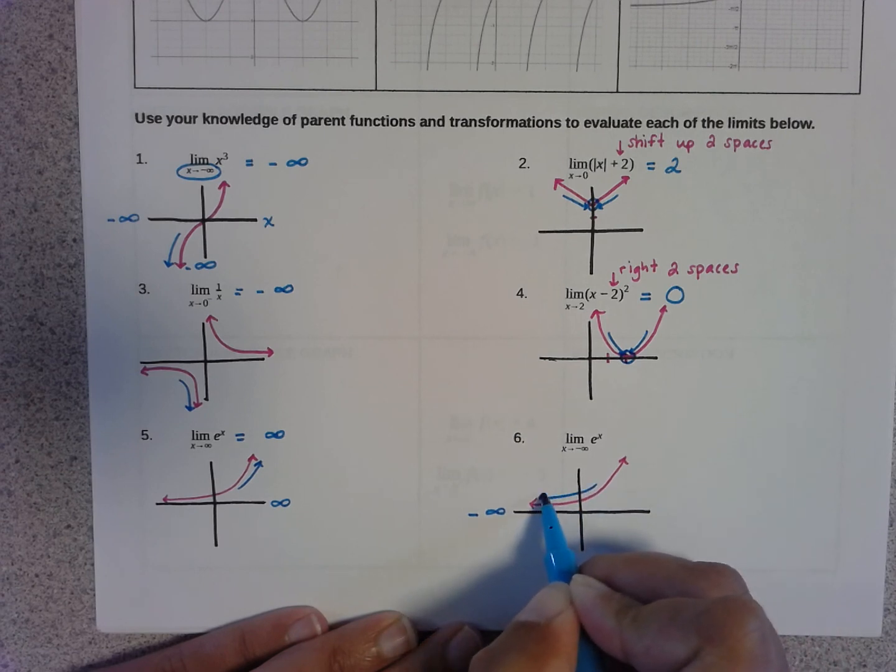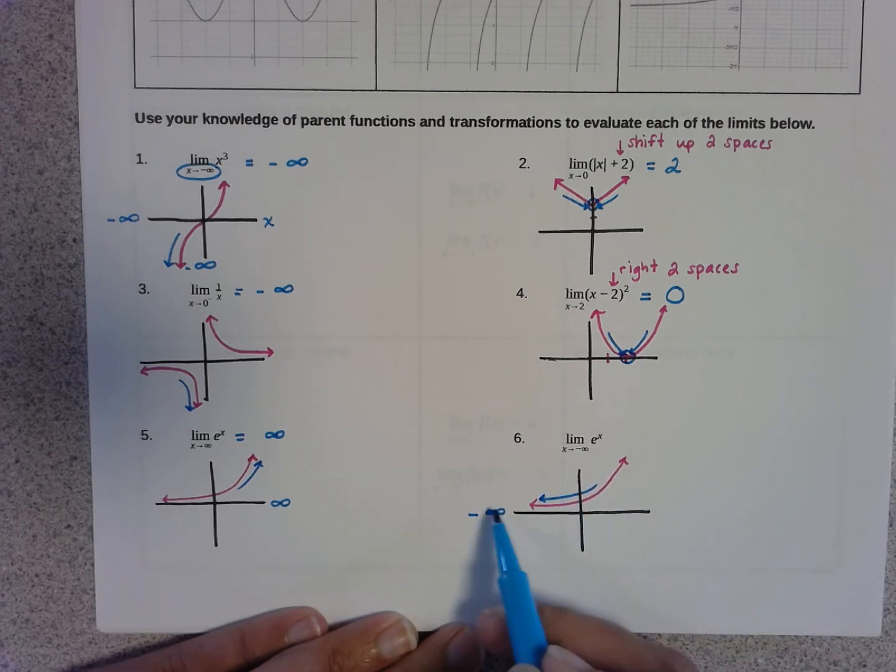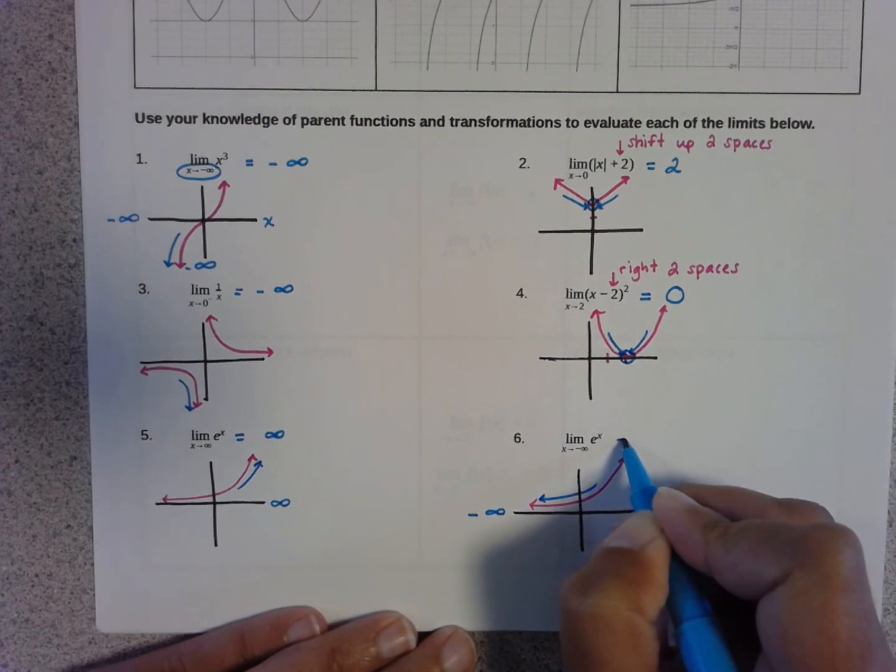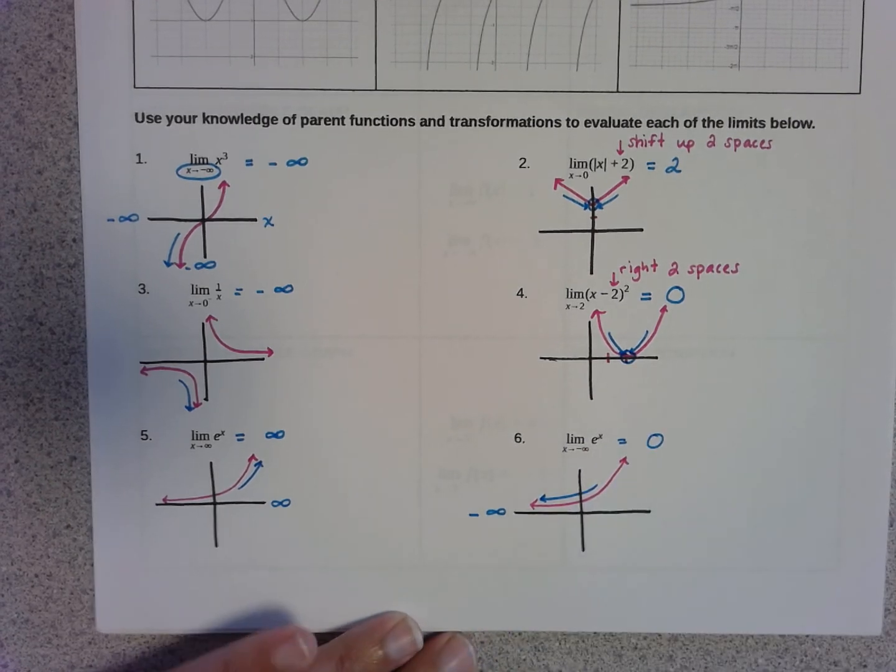As I go to the left, I'm approaching the horizontal asymptote on this graph, which is a y value of zero.